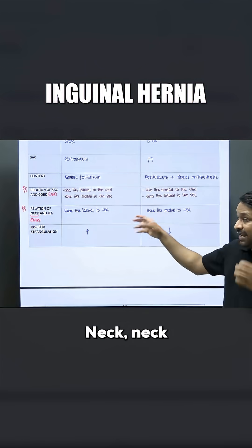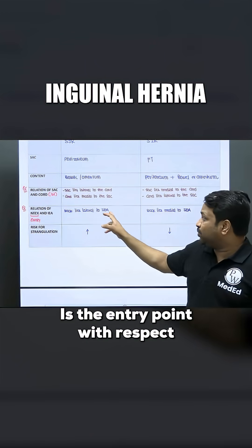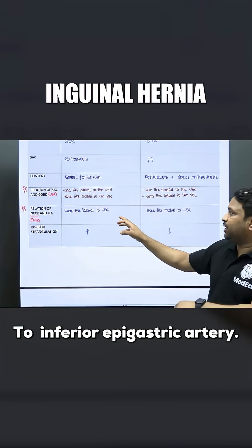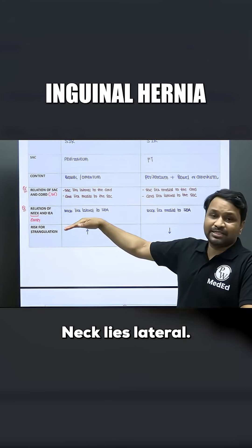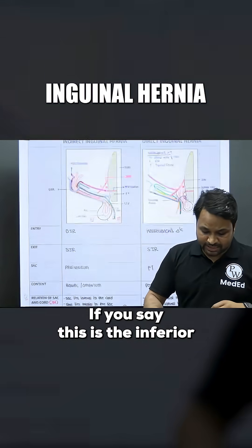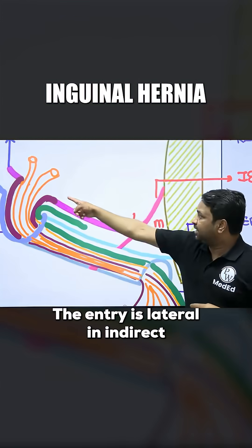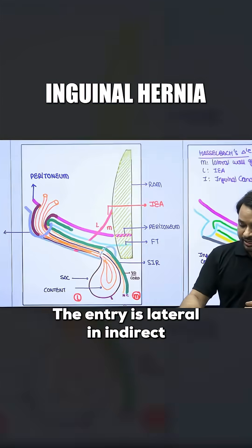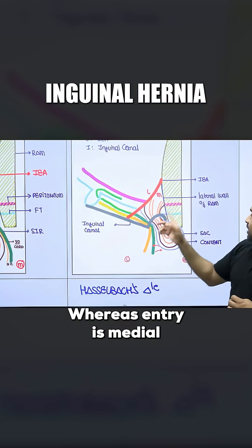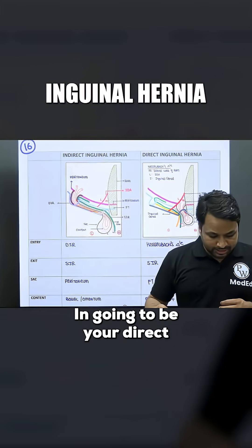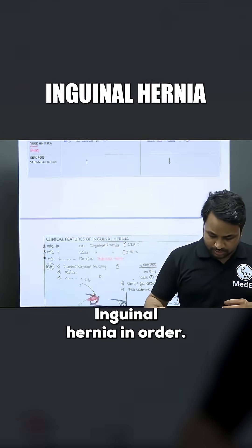We need to look at the neck — the neck is the entry point with respect to the inferior epigastric artery. The neck lies lateral to the inferior epigastric artery in indirect inguinal hernia, whereas the entry is medial in direct inguinal hernia.